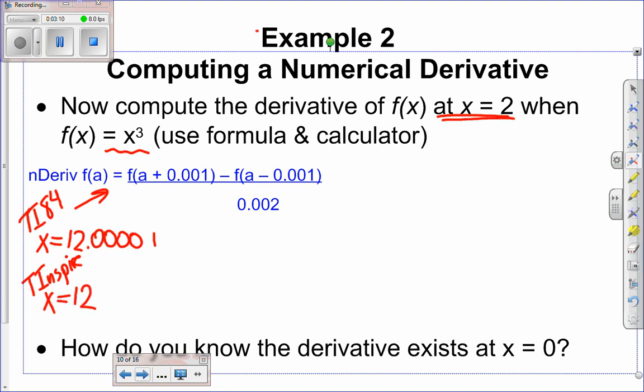If I use the definitions as h approaches 0, this is the correct limit. But why does the calculator give you 12.001? Remember, it cannot do limits. So it uses these values for h.